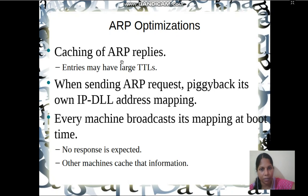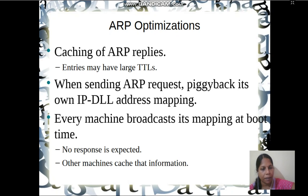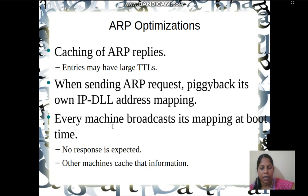Next is ARP optimization. The first suggestion is caching of ARP replies: if the receiver machine memorizes the ARP reply (the IP-to-hardware address mapping), it can reuse it the next time; such entries should have a large time-to-live field. The second optimization is piggybacking: when sending an ARP request, include your own IP address and data link layer address so that receiving machines can learn the mapping. The third method is for every machine to broadcast its mapping at boot time so all other machines can receive it.